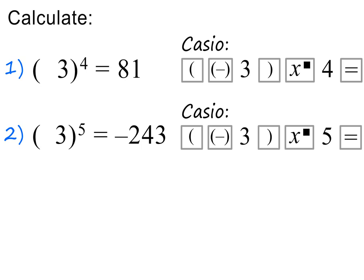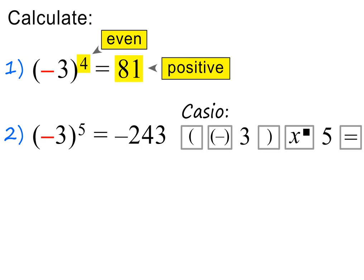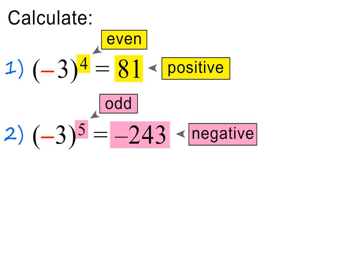Please note, both of these powers have a negative base. In the first power, the negative base is raised to an even exponent — when this is the case, the answer will always be positive. And in the second power, the negative base is raised to an odd exponent — whenever this is the case, the answer will always be negative.